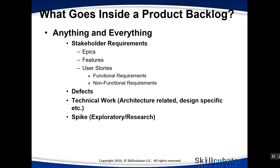The majority of product backlog items will consist of stories, whether functional or non-functional. In addition to stories, the backlog will also have defects — when the team is building an application, defects will be raised and sit in the backlog. There is also a lot of technical work that needs to be done, known as enablers. This work may not be directly related to the user but will help them use the system, and can include architecture-related or design-specific work.